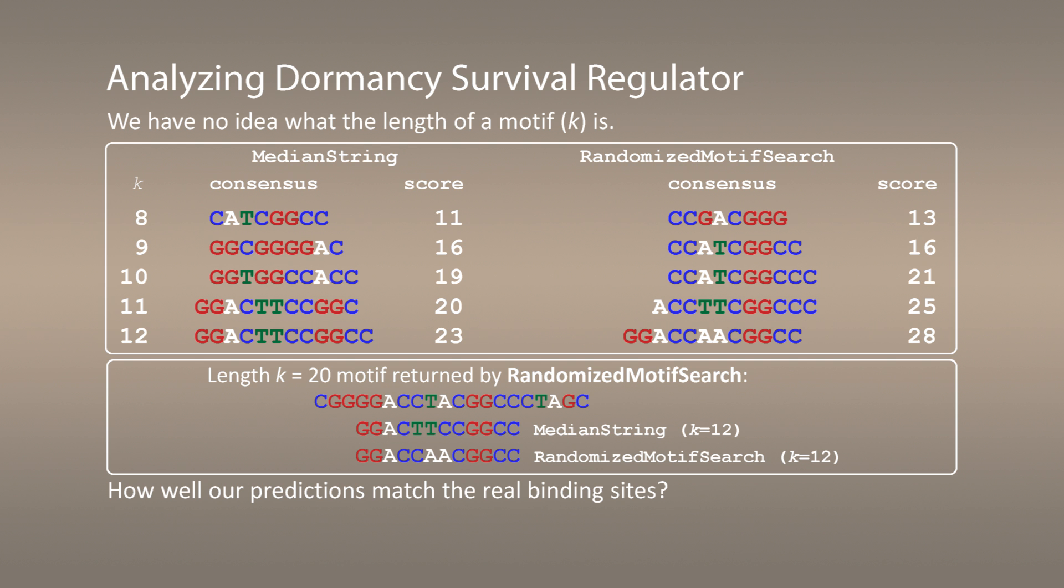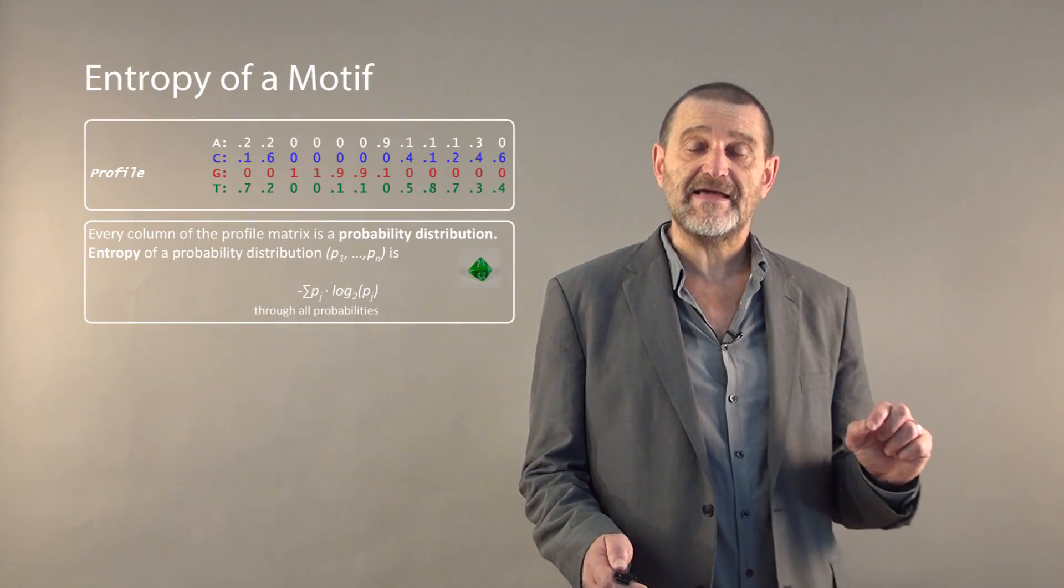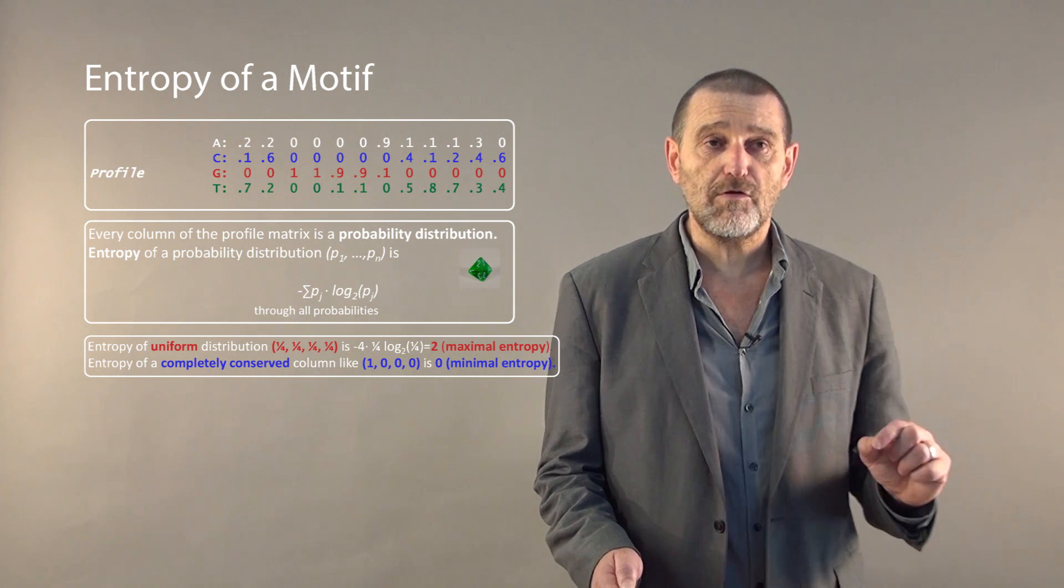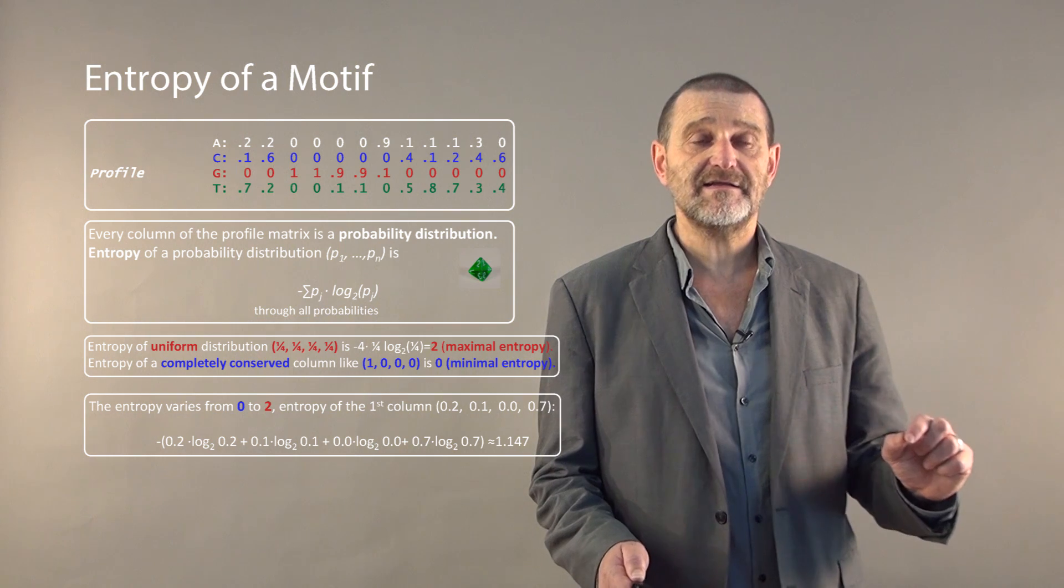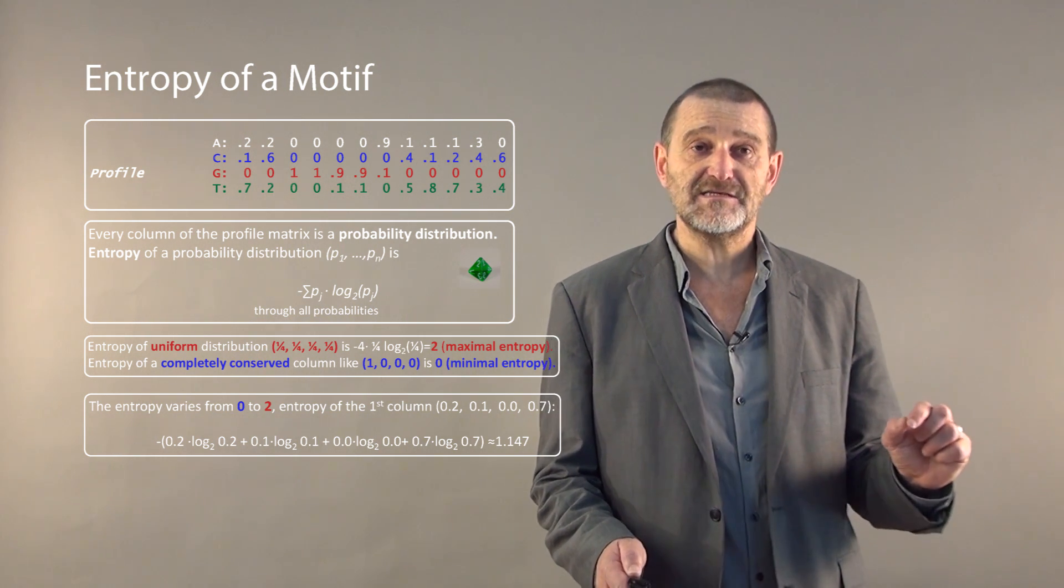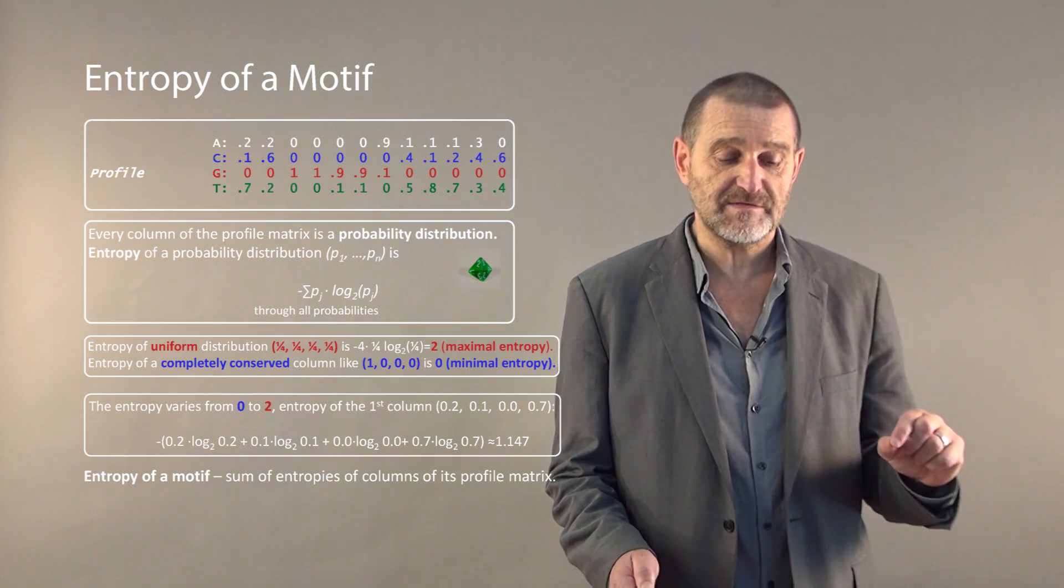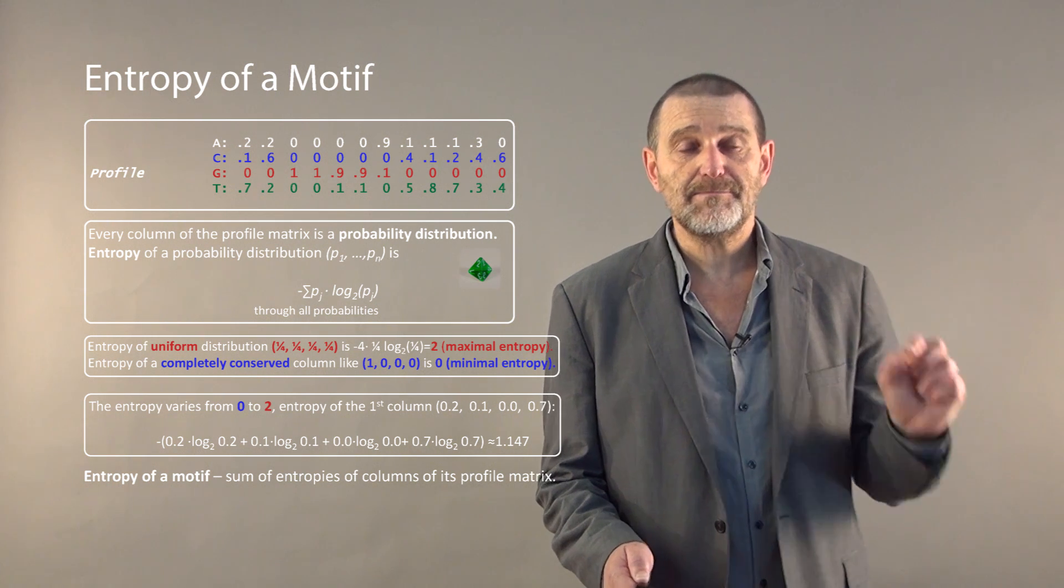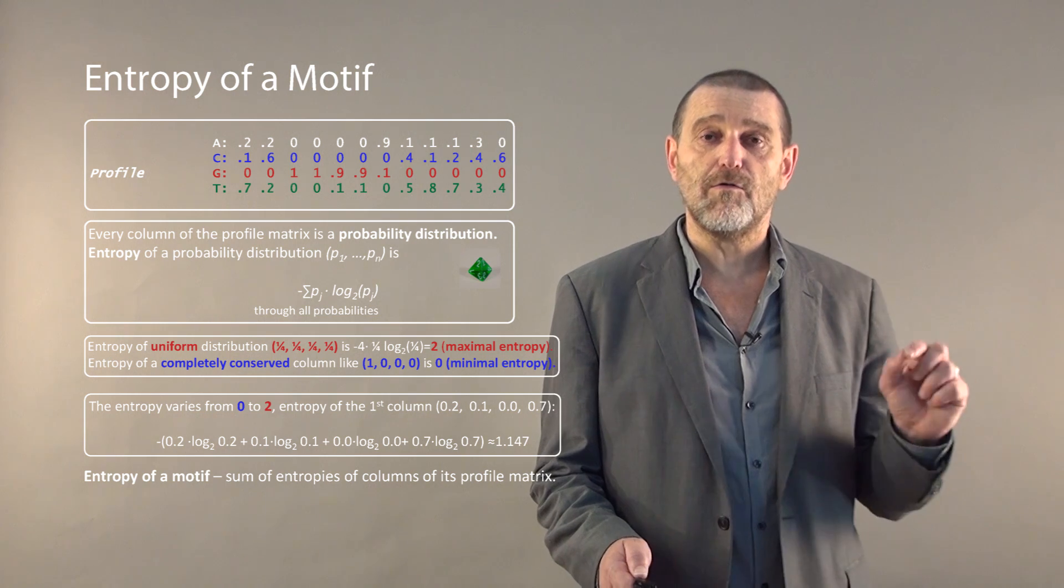To answer this question we need to introduce the notion of motif entropy. Entropy of motif is defined in the following way. First we construct the profile matrix. Every column of profile matrix corresponds to a biased four-sided dice, or in other words to a probability distribution p1, p2, pn, where sum of pi equals 1. Entropy is simply defined as minus pi multiplied by logarithm pi and sum up over all probabilities.